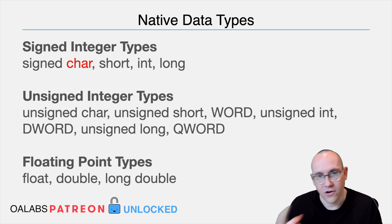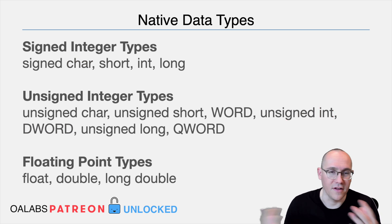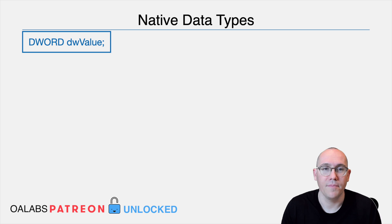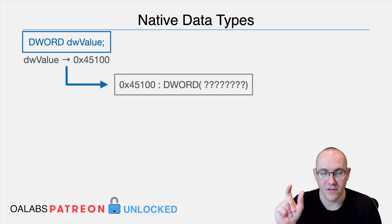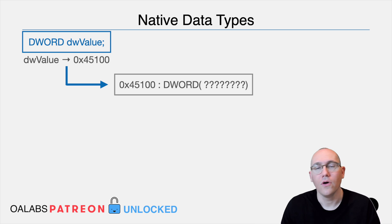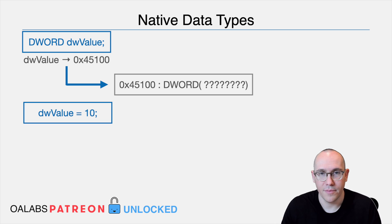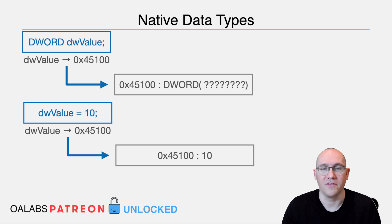Native data types are things like char, dword, int, unsigned int, etc. The way this works is: when you're writing code, you'll create a variable of a native data type, and at compile time that variable is going to be assigned an address in memory — either on the stack if it's a local, or in your data section if it's a global — and that address will then contain whatever data is in that variable. So if you assign 10 to your variable, the compiler will just assign 10 to the address of that variable. Everything is very straightforward.